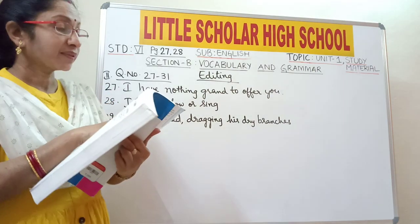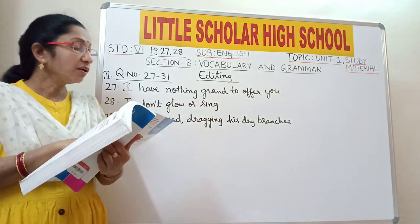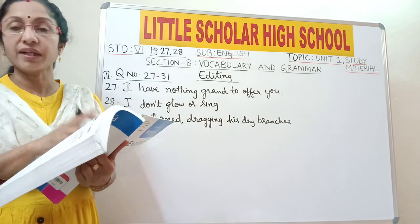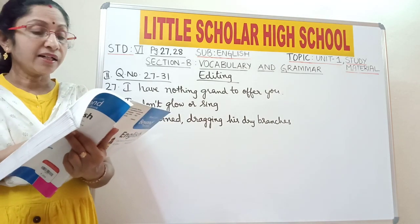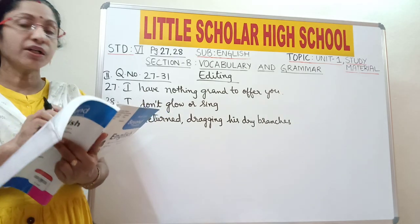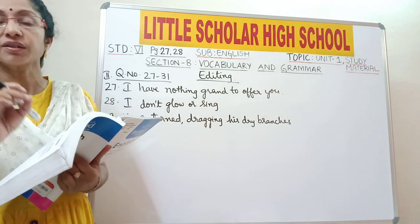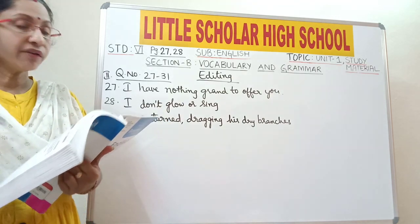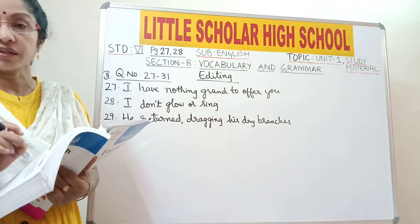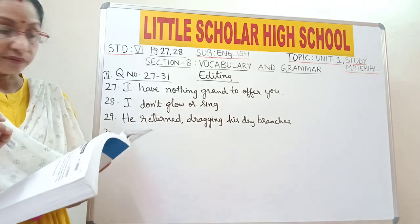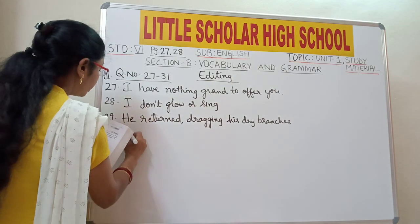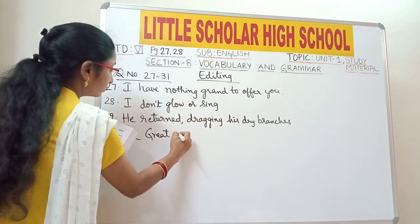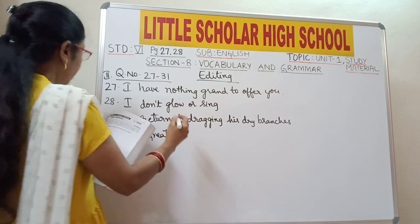Question number 30: 'A great one looked grave.' We are talking about only one particular great one in this lesson — we know who the great one is. So we cannot use the article 'a', which means any one person. It should be replaced with the article 'the', which we use when talking about a particular person. Write: 'The great one looked grave.'